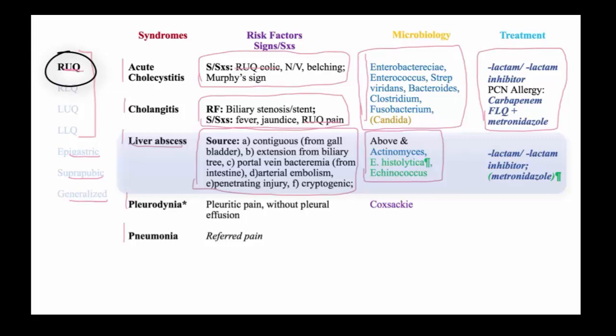For occult cryptogenic cases, Actinomyces occurs usually from the mouth but seeds via the bloodstream somehow into the liver. Streptococcus intermedius constellatus also occurs as a cryptogenic liver abscess. People traveling to areas where E. histolytica is prevalent, mainly Latin America, can get a liver abscess due to this pathogen.